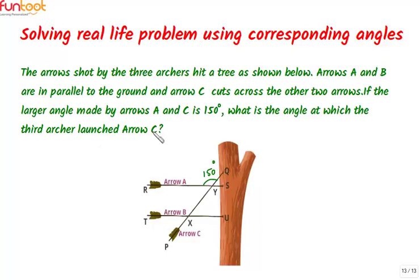Before finding the launching angle we need to understand what is the meaning of launching angle. If we consider this as our ground level and we extend arrow C in backward direction, then this angle which is formed between the extended line and the ground level is the launching angle. This is what we have to find in this question.